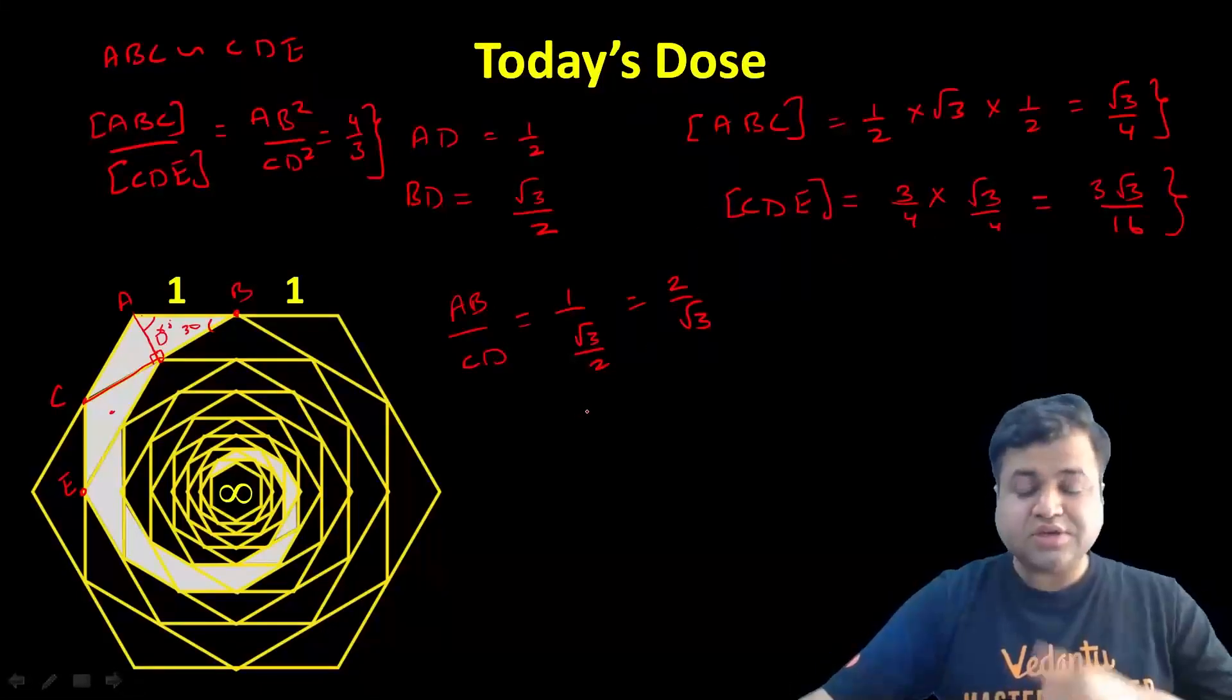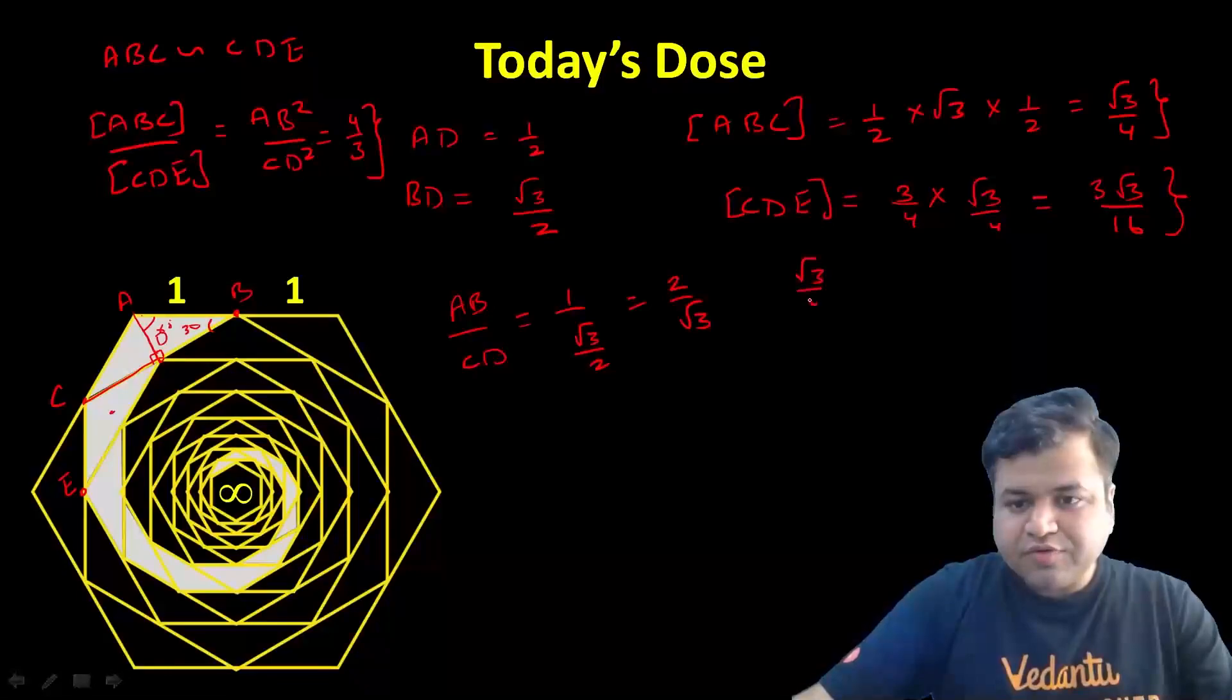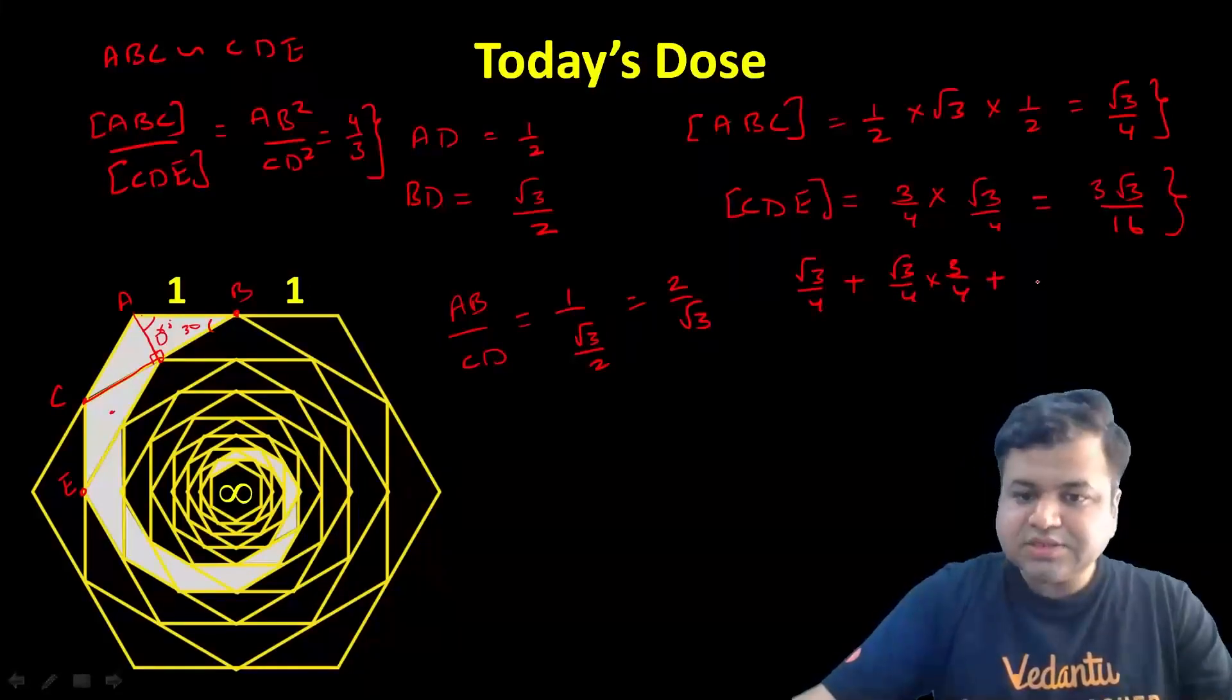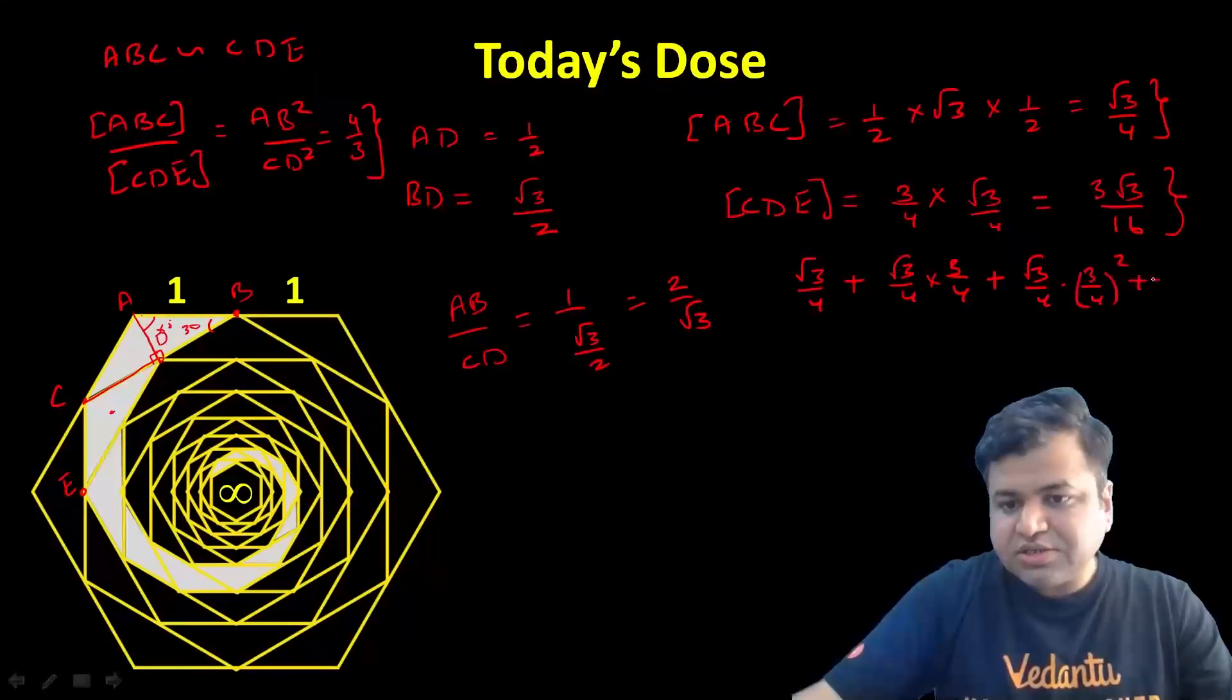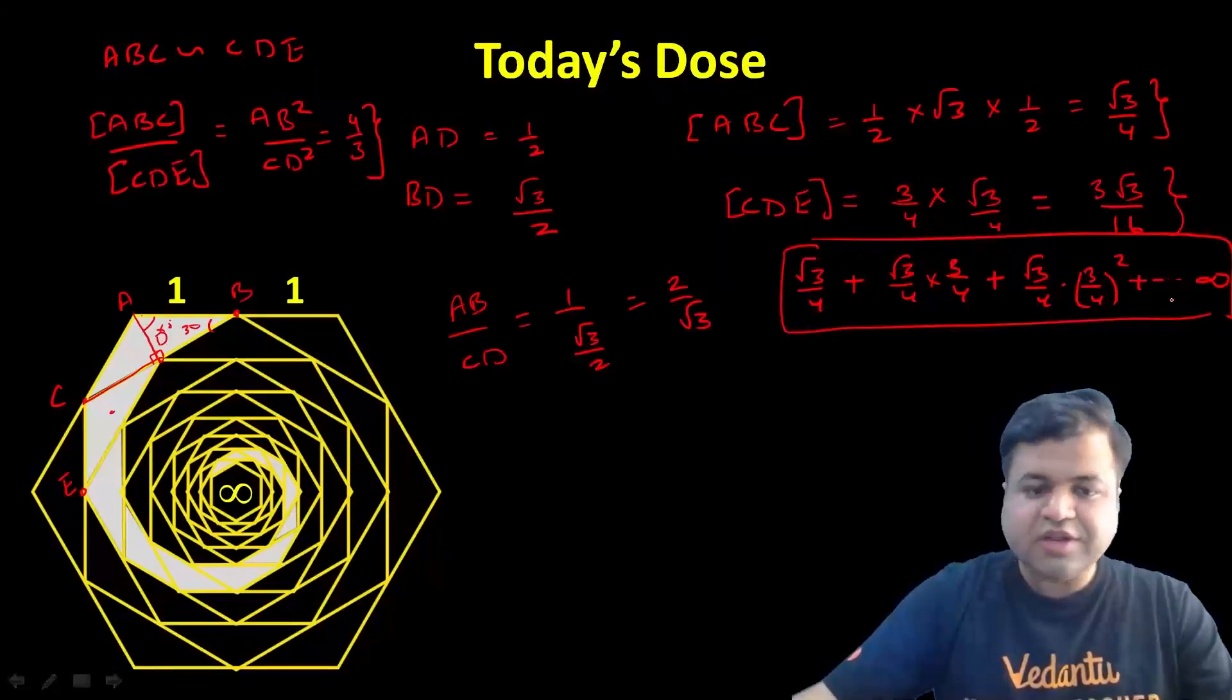this ratio will keep on moving because we have an infinite strip. The final area equals root 3 by 4 plus root 3 by 4 times 3 by 4 plus root 3 by 4 times (3 by 4) squared, and so on till infinity. So practically we have an infinite GP, and we know the sum of an infinite GP.